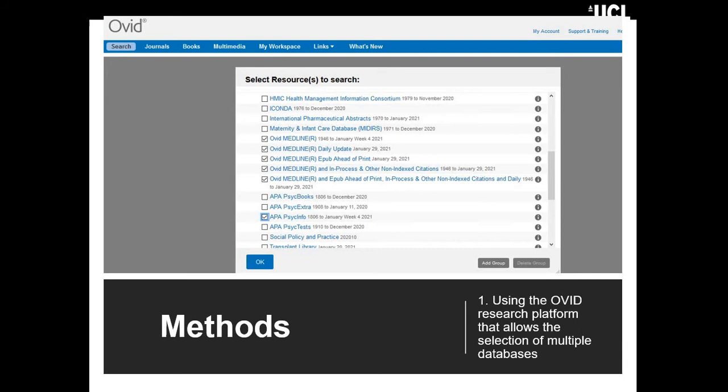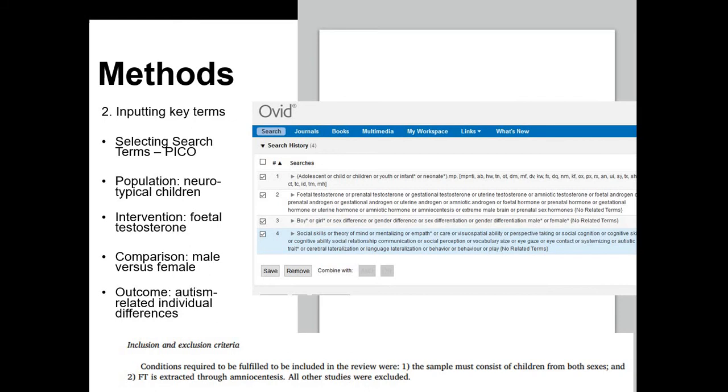A brief run through of how I conducted the systematic review. I used the Ovid research platform that allowed me to look at different databases simultaneously. Some of these allowed looking at the gray literature. I didn't focus on that, but I did include preprints from Medline, PsycInfo, and other databases you can find in the paper.